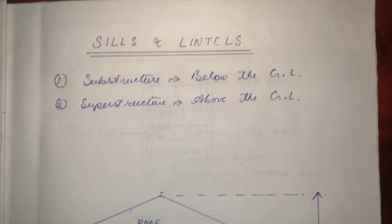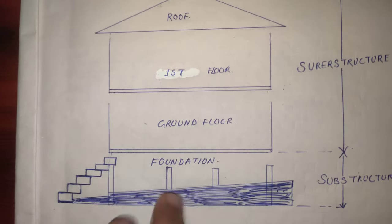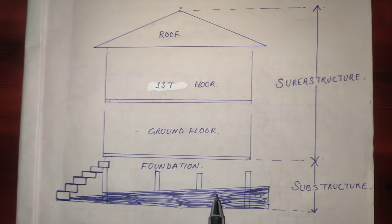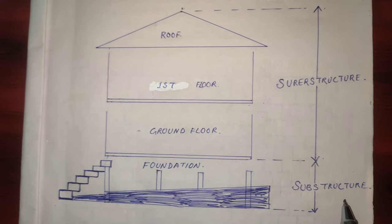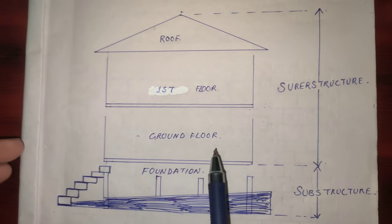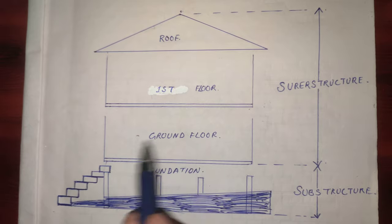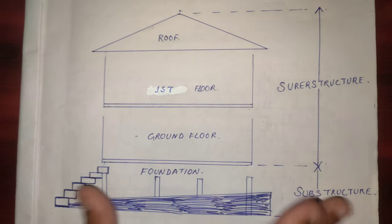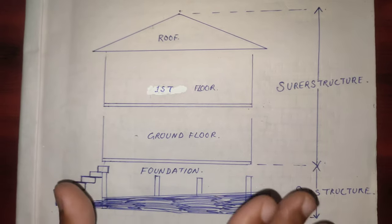So I have prepared a drawing for you. You can see here, the foundation part or excavation part lies in the substructure, and the floors - the ground floor, the first floor, and the roofs - those lie in the superstructure. These are the general components of a building.